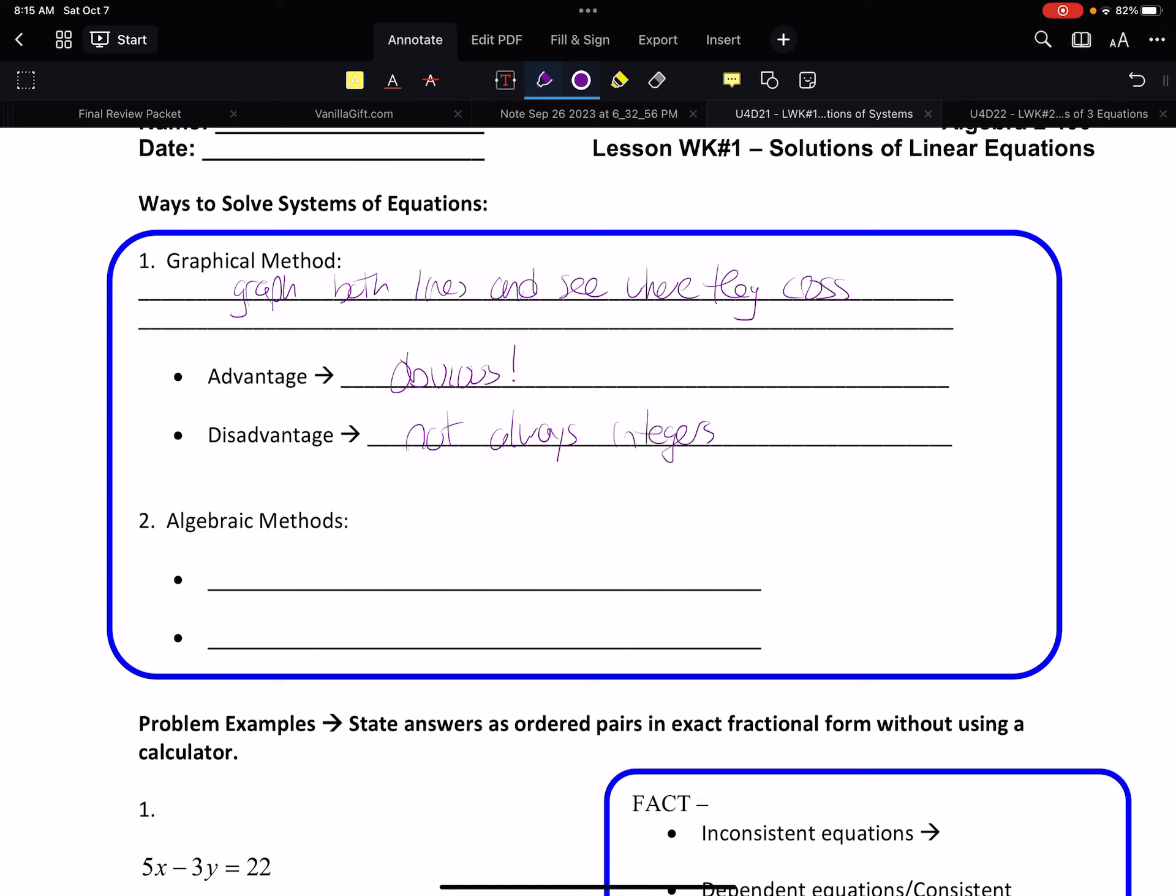It may look like it crosses at 2, 1, but really that was 2, 1.1. And it's just not as obvious to us. So graphing may not be the best method every time. We have our algebraic methods. We got elimination and we have substitution.